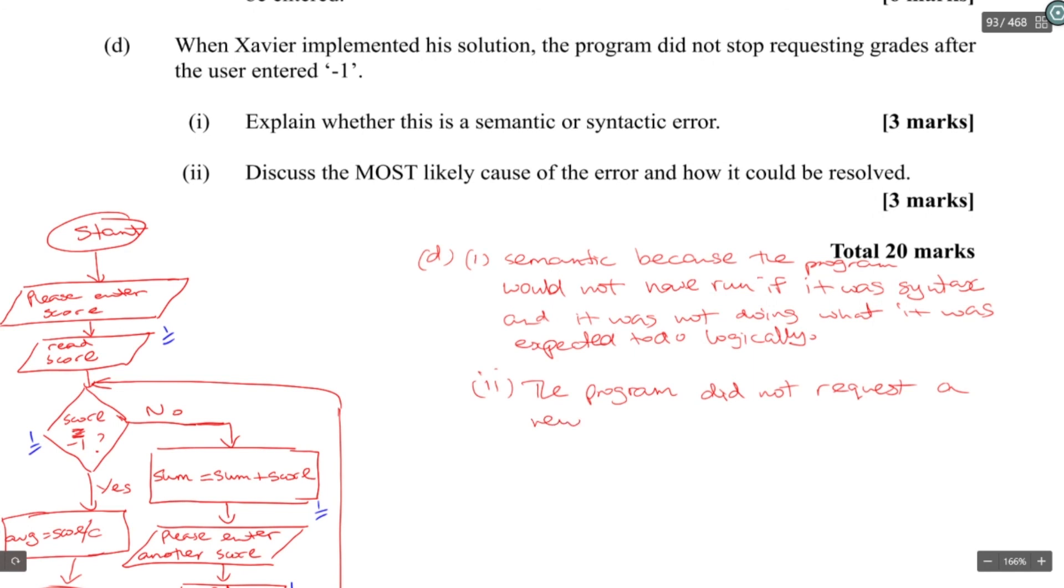If you don't request a new value for score before the loop ended, then the loop will just keep thinking the last score is what you entered was correct. So that was it there.